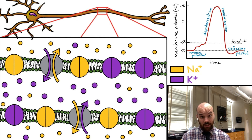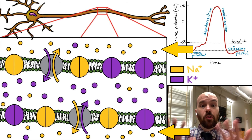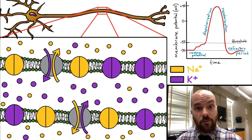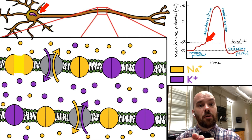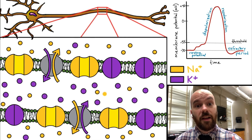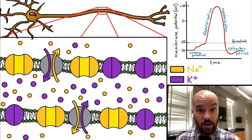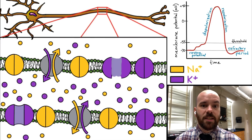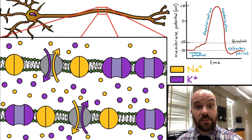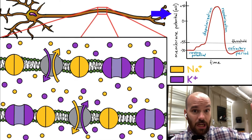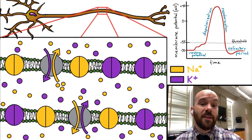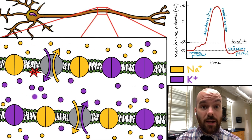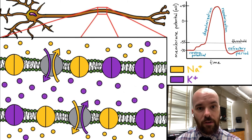Quick recap: at resting membrane potential, sodium is on the outside, potassium is on the inside, and channels are closed. Enough excitatory inputs bring the voltage to negative 55 millivolts — the threshold — and sodium channels open, causing depolarization to positive 40 millivolts. Then sodium channels close, potassium channels open, potassium flows out, and repolarization brings the voltage back down, turning off the action potential. Meanwhile the chain reaction continues along the axon, and the sodium-potassium pump uses ATP to restore gradients during the refractory period.